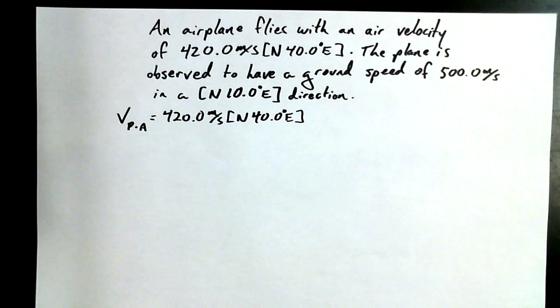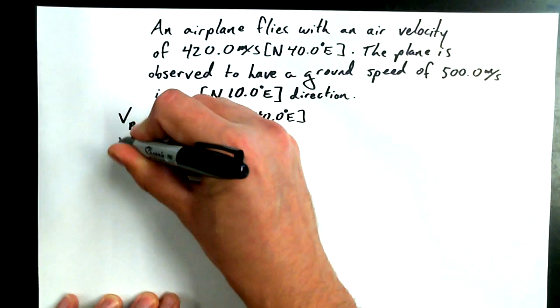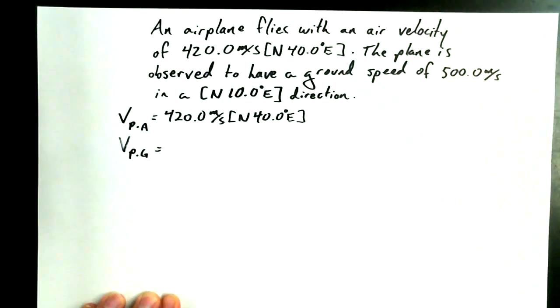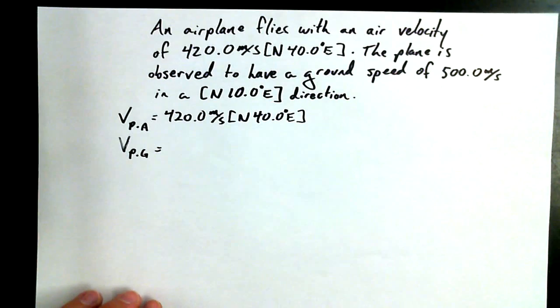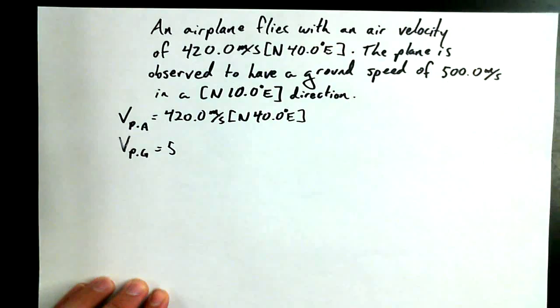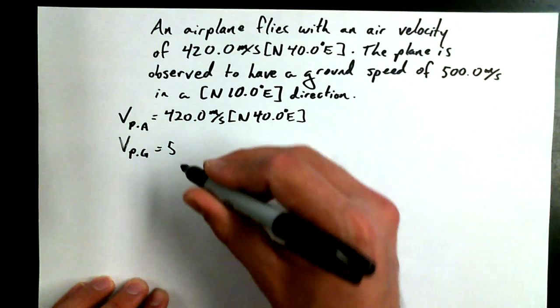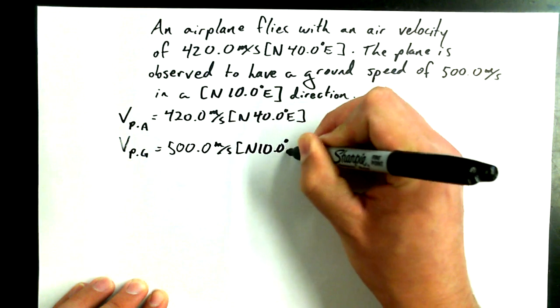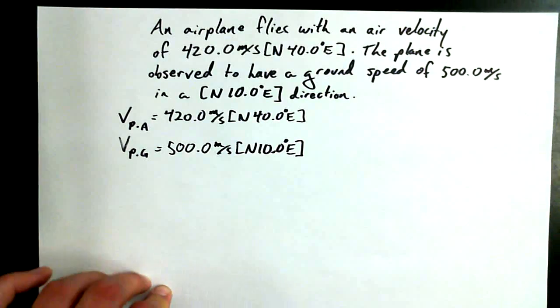That's what air velocity means. Then it says the plane is observed to have a ground speed of 500 meters per second in a north 10 degrees east direction. So when we say ground speed for the plane, what do you suppose that's telling us? The plane relative to the ground? Yeah, the velocity of the plane relative to the ground. Great. So you need to be able to decode these things a little bit.